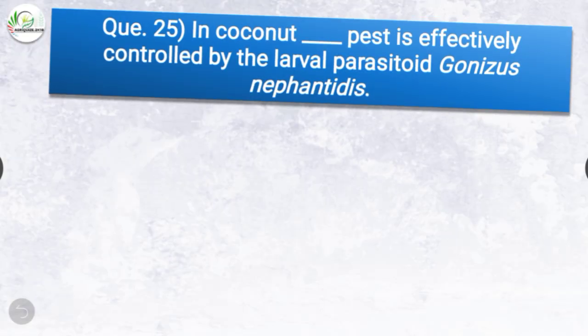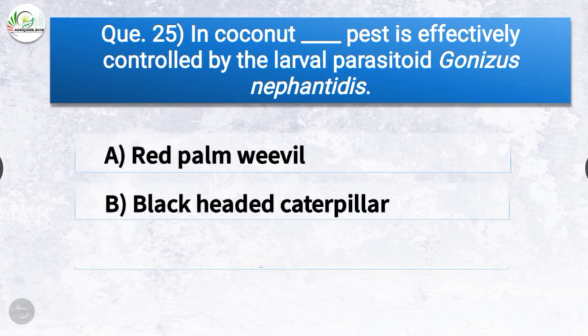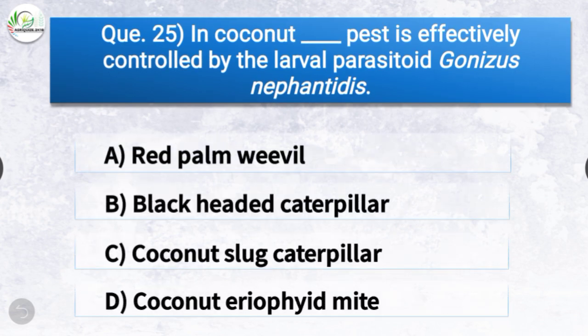Question number twenty-five: In coconut, dash pest is effectively controlled by the larval parasitoid Goniozus nephantidis. The options are red palm weevil, black headed caterpillar, coconut slug caterpillar, or coconut eriophyid mite. The correct answer is option B, black headed caterpillar — in coconut, the black headed caterpillar is effectively controlled by the larval parasitoid Goniozus nephantidis.